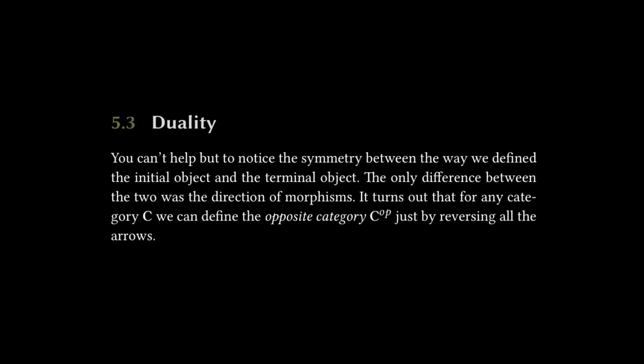So that brings us to the third subsection on duality. You can't help but notice the symmetry between the way we define the initial object and the terminal object. The only difference between the two was the direction of morphisms. It turns out that for any category C, we can define the opposite category C op just by reversing all the arrows. In the lectures, Bartosz says we probably could have called the initial object co-terminal or the terminal object co-initial.